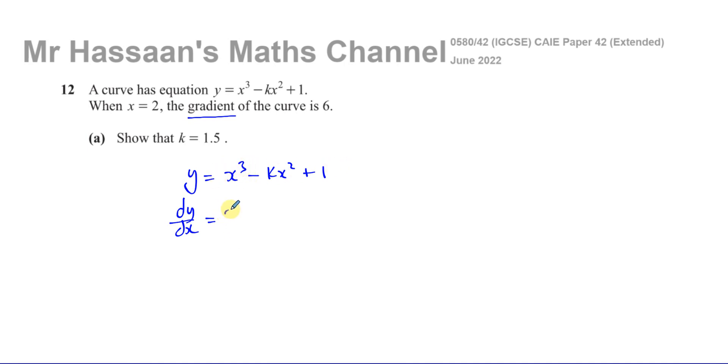So you multiply by the power, so 3 times 1 which is 3, and you take 1 from the power. So 3x squared minus 2 times k which is 2k, x, take 1 from the power, becomes x to the power of 1 which is x, and the constant term becomes 0. Any constant term will become 0.